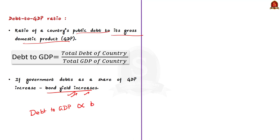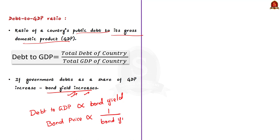If government debt as a share of GDP decreases, bond yields will decline. The Finance Secretary said that bond yields spiking was a normal response to an expanded borrowing program and is very common in a well-run and efficient market like India.